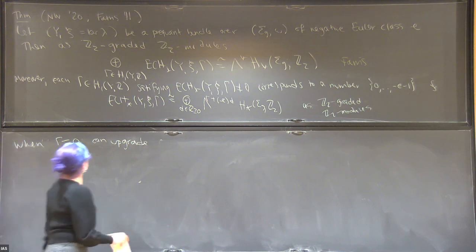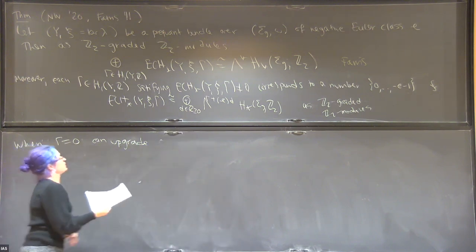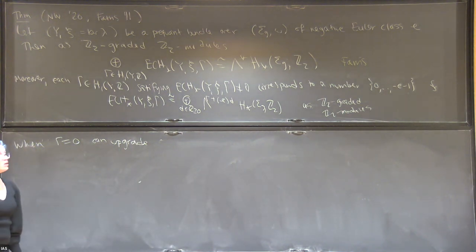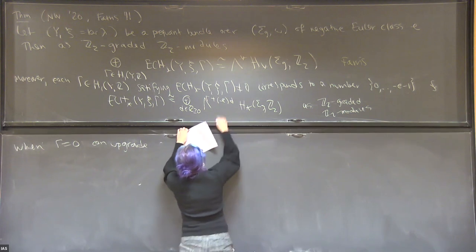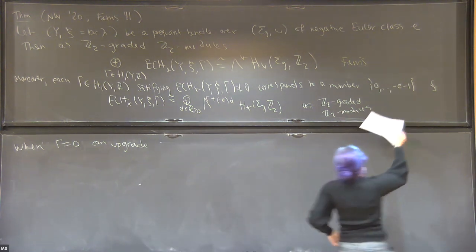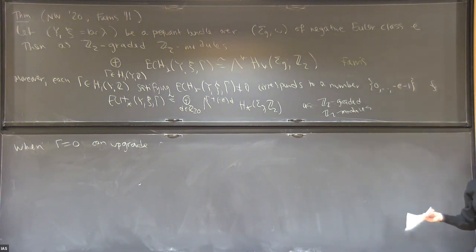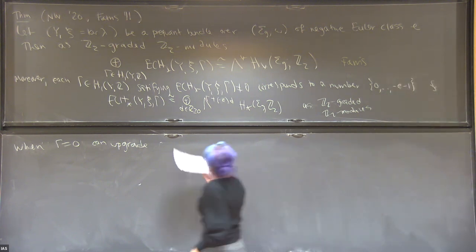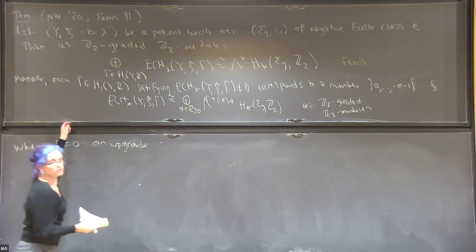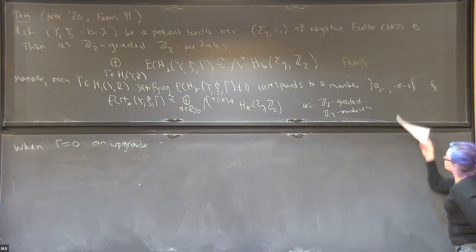The ECH is a direct sum over non-negative D. The exponent is gamma, where gamma is a number from 0 up to negative E minus 1. Gamma is a class in H1, and that class in H1 corresponds to some number 0 up to negative E minus 1.